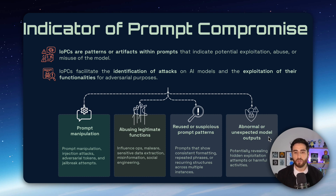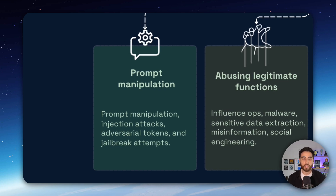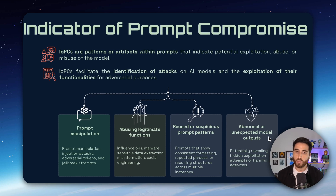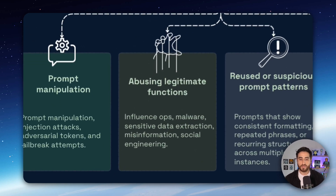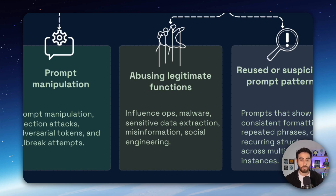IOPCs have four subsets. The first is prompt manipulation — injection, jailbreak, adversarial tokens — meaning how an attacker manipulates prompts to extract information. The second is abusing legitimate functions: for example, LLMs are good at generating code, but that code can be used to generate malicious code or malware. Another example is generating images for specific countries or personalities, which can be used for influence operations, misinformation, and social engineering. You need a way to identify these kinds of patterns.